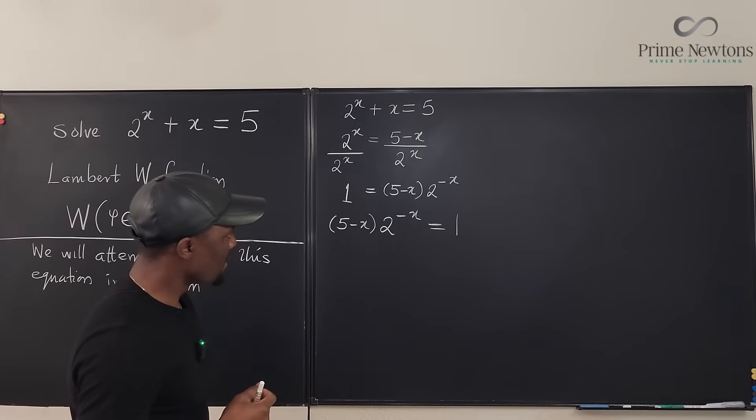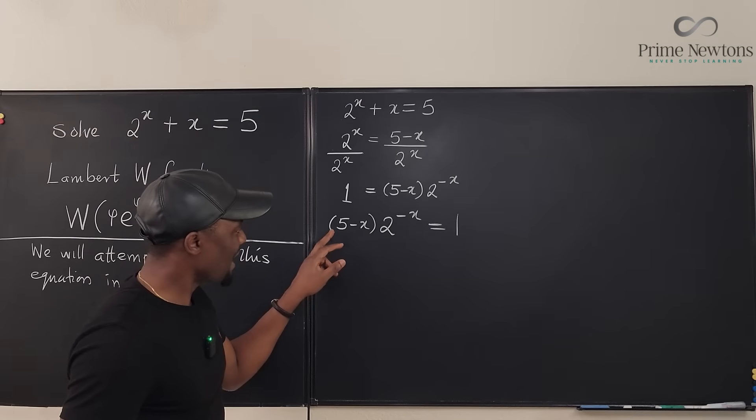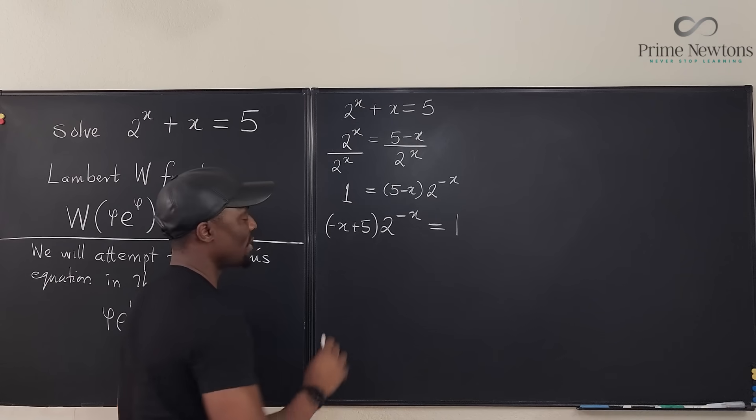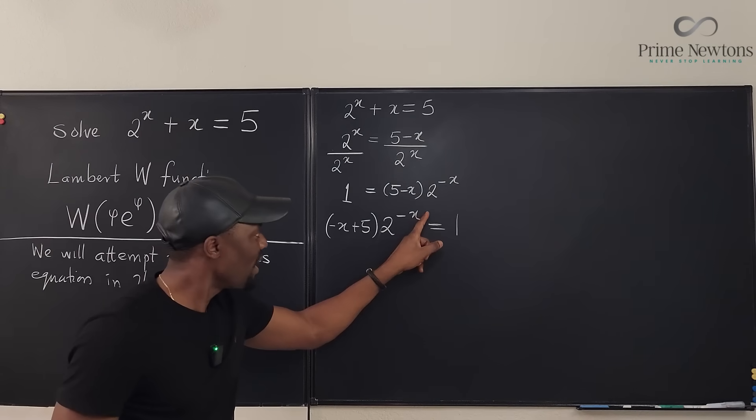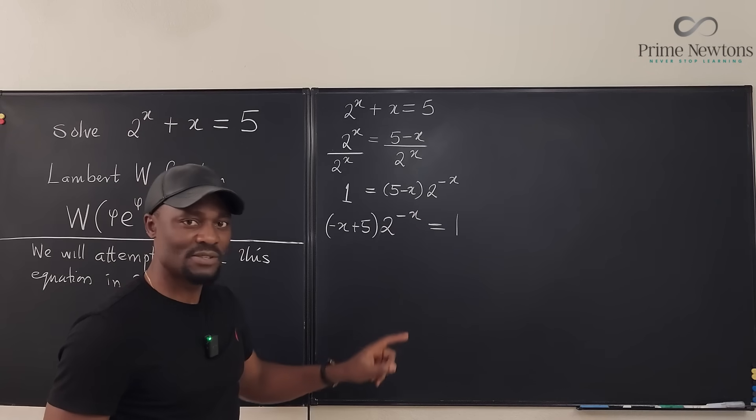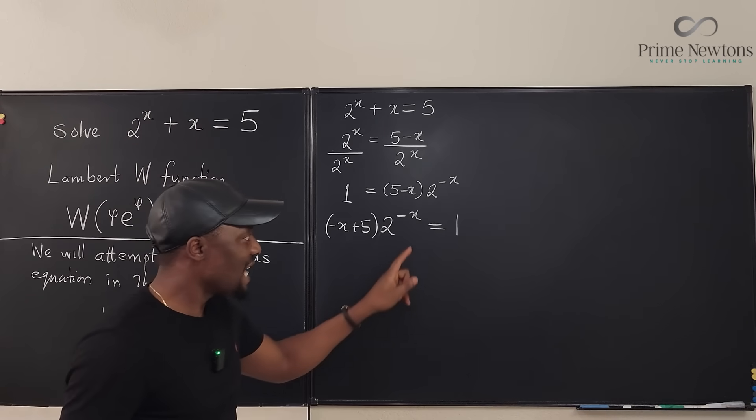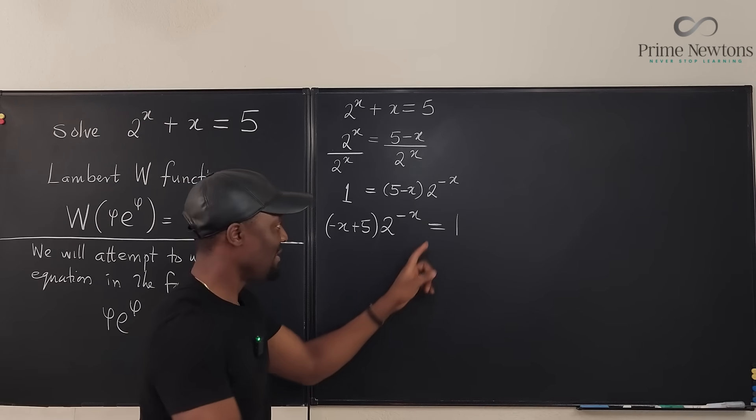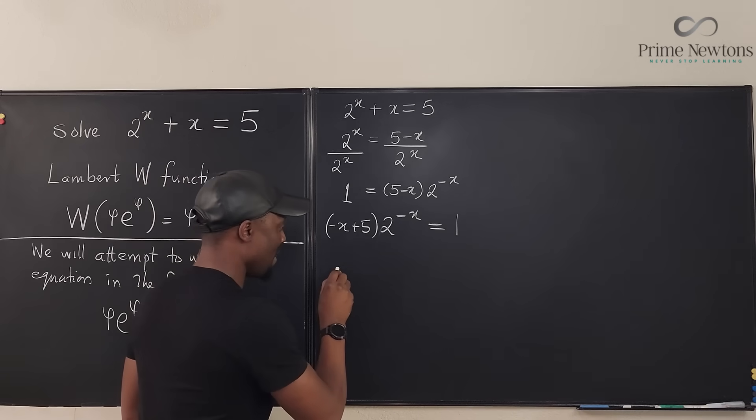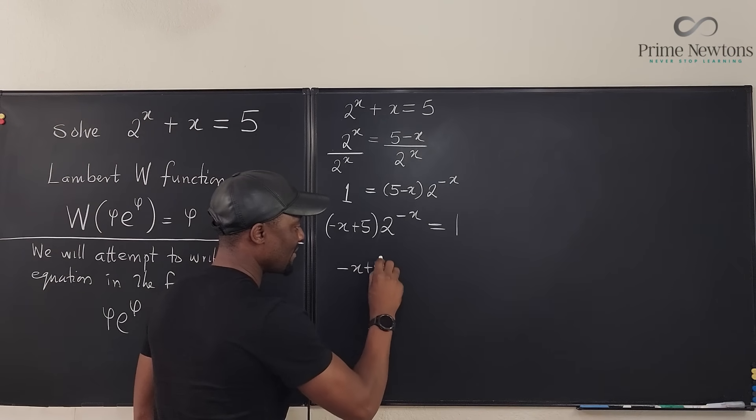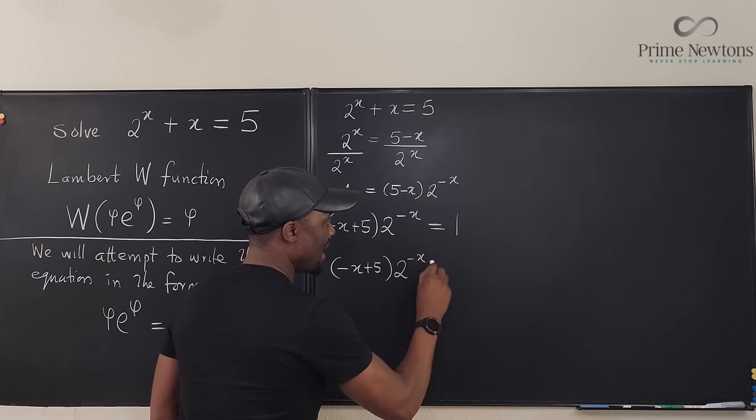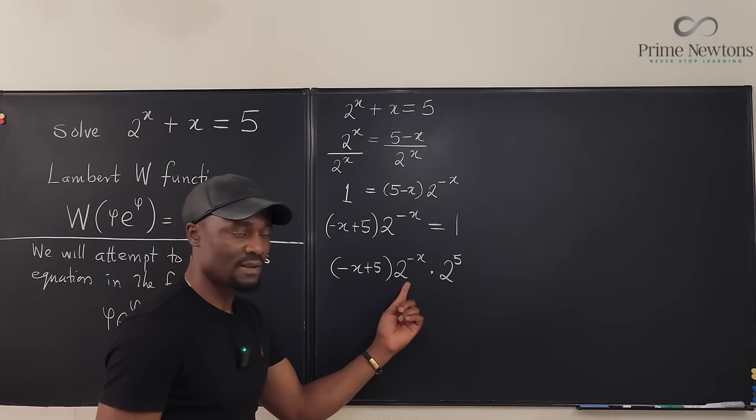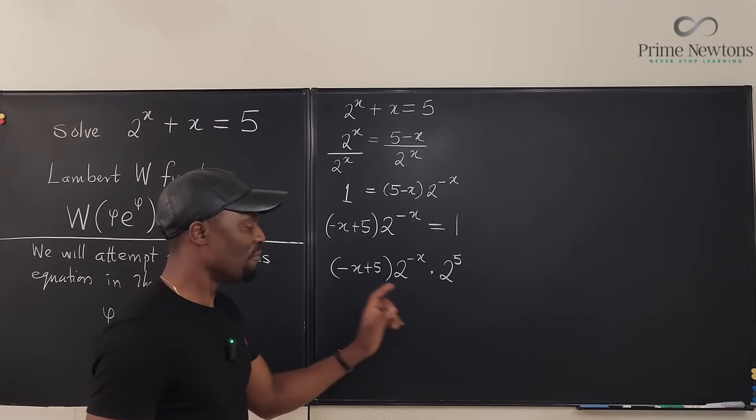So we're going to have (5 - x) times 2^(-x) = 1. What can I do? Look, I can rewrite this as -x + 5. Actually, it's better for me to write this as -x + 5. That's what I have here. So what can I do here so that what is here is the same thing as this? I can add 5 to this. And remember that adding 5 to an exponent is the same thing as multiplying the entire thing by 2^5. This is -x + 5.